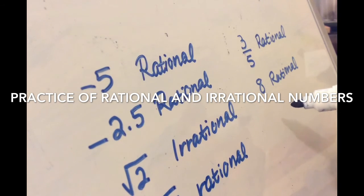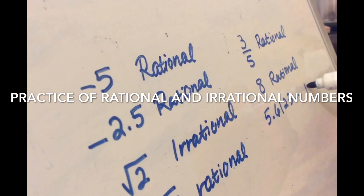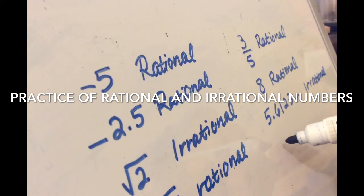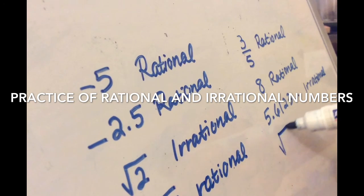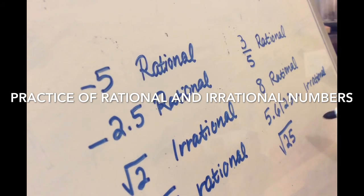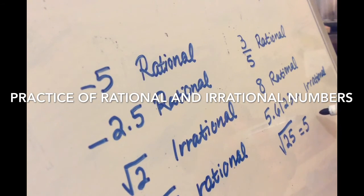What is 5.6123 and continuing? It's irrational. What is radical 25? The square root of 25 is 5, which is a whole number, so it's rational.